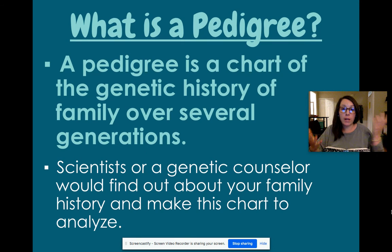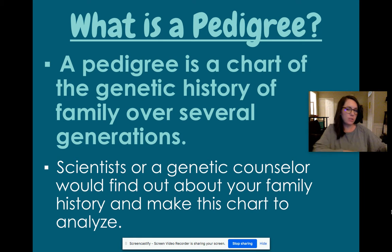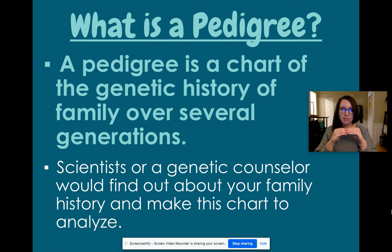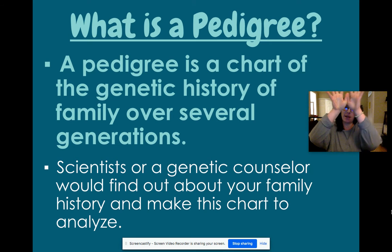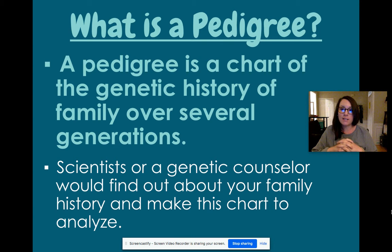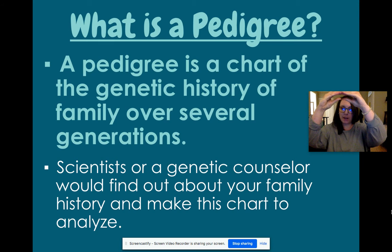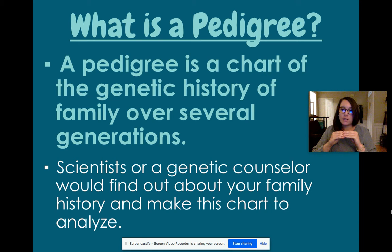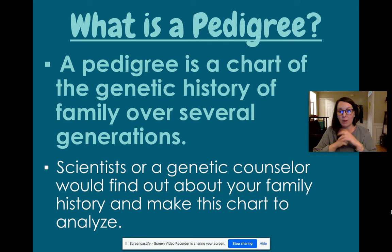So let's get going. What is a pedigree? It is a chart of the genetic history of a family over several generations. Think about back when you were in elementary school and they had you do your family tree — starting with your parents or grandparents and branching out to all the different people in your family. A pedigree is similar, except it shows how different genetic traits are being passed down, and who is affected by one specific trait.